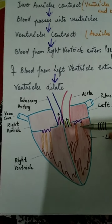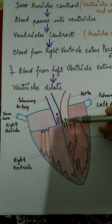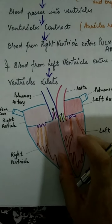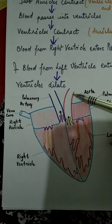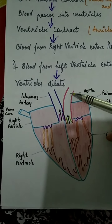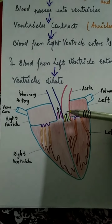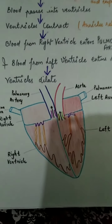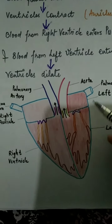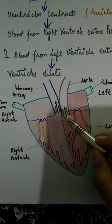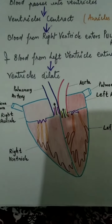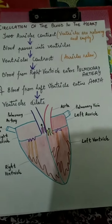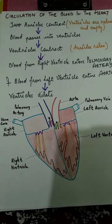Once the blood is pushed out from the ventricles, the ventricles relax. When they relax, the blood present in these blood vessels comes back. When it comes back, the pocket-shaped semilunar valves get filled and then get closed. In the previous video we showed how this looks when they get closed. This is all about the circulation of blood in the heart.